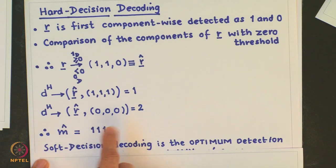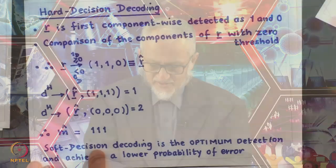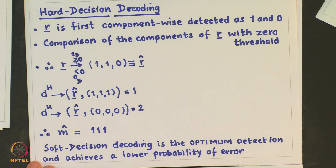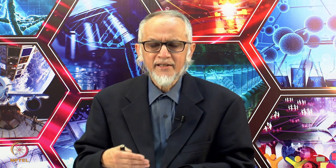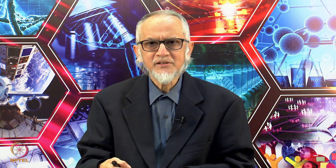We see that in this case the decisions differ. It is important to note that soft decision decoding is the optimum detection and achieves a lower probability of error. In practice, the difference between soft and hard decision decoding may not be very significant, and hard decision decoding is easier to implement. So in our discussions we will assume hard decision decoding.